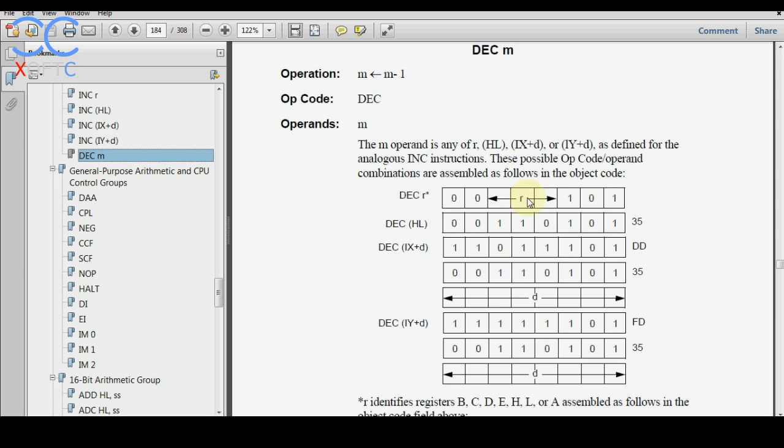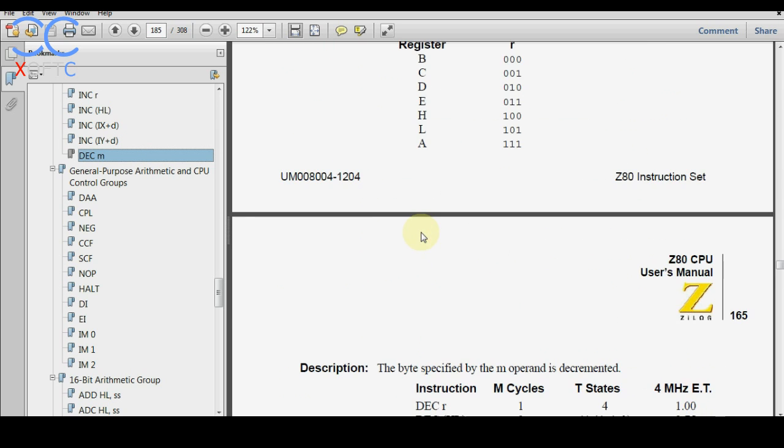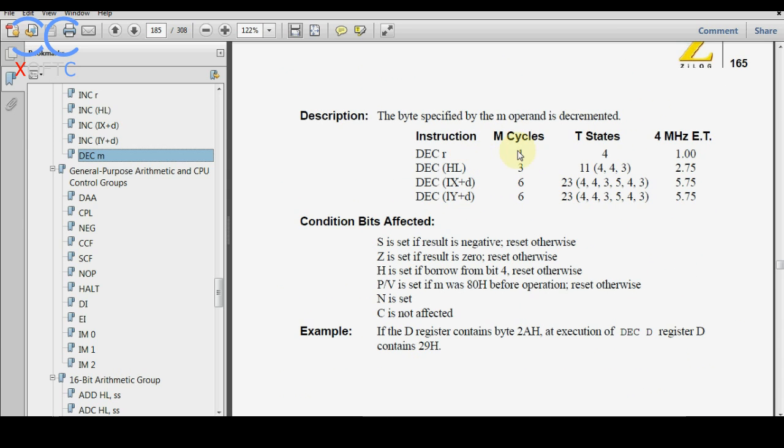But if you look at other commands then we can see how we need to configure them, what value in each position, each bit will mean which registers it will affect, and here again how many cycles it will take to execute this command.